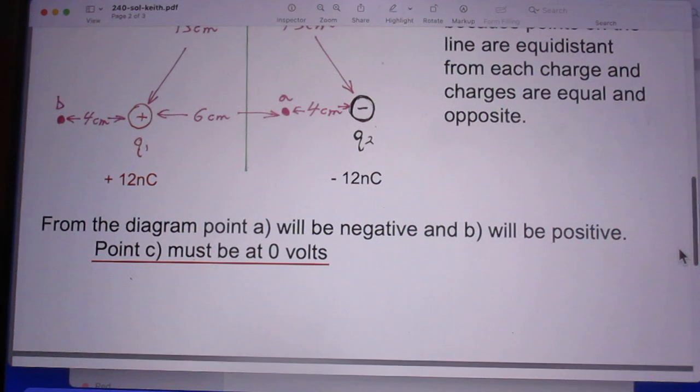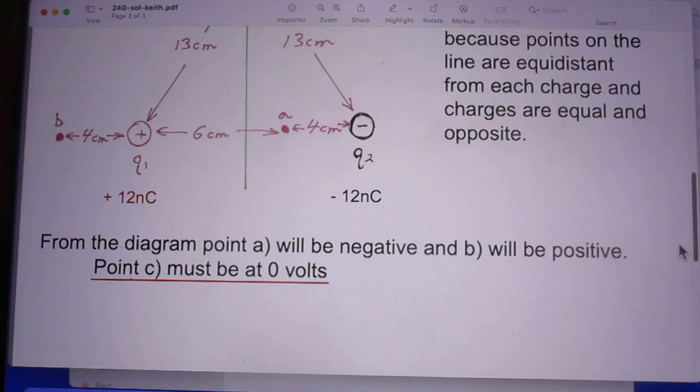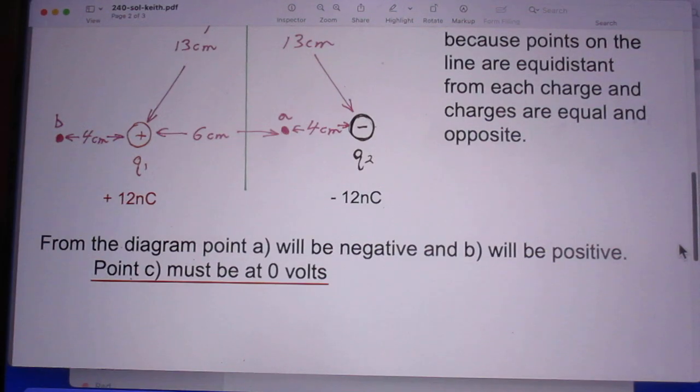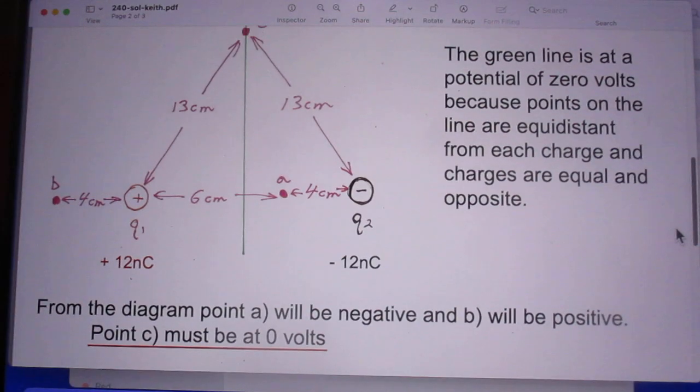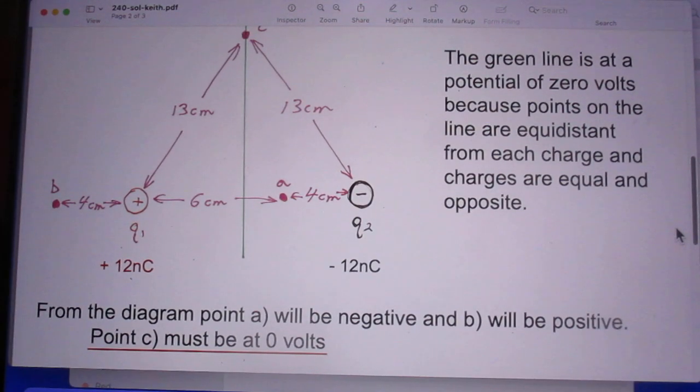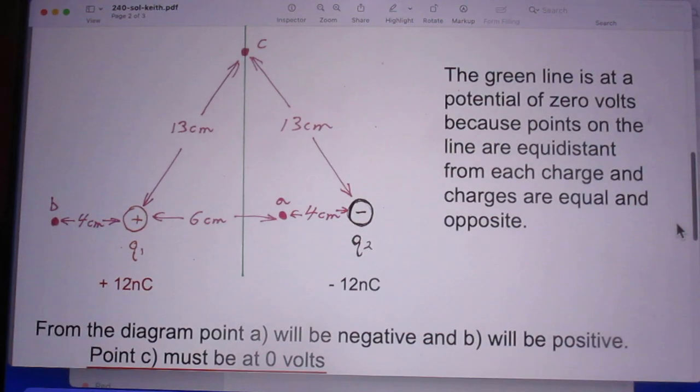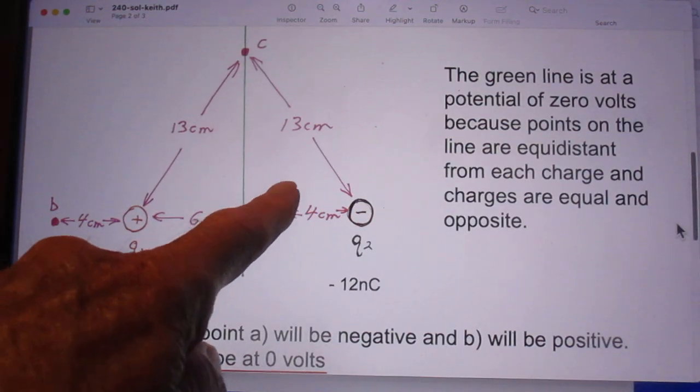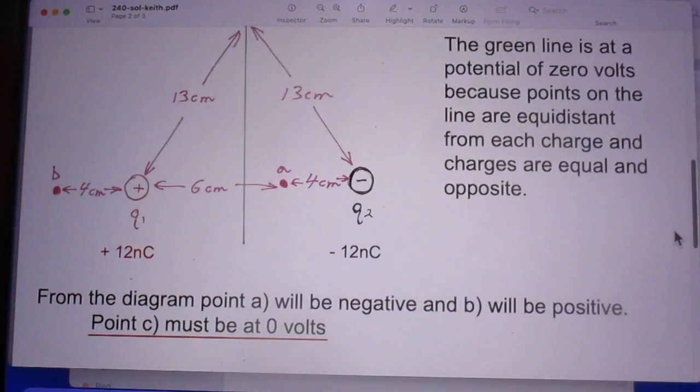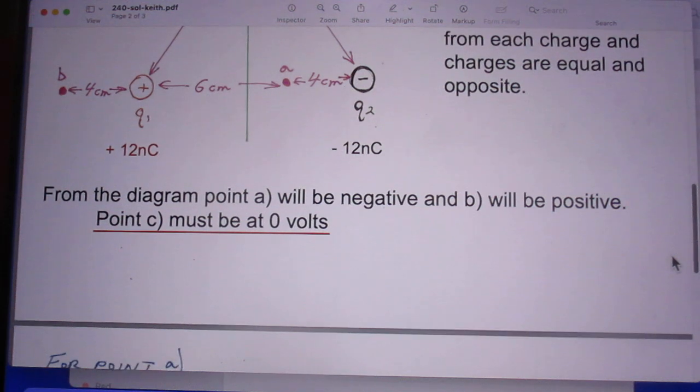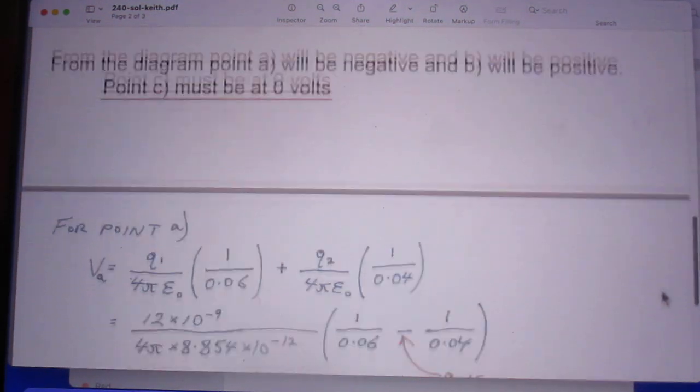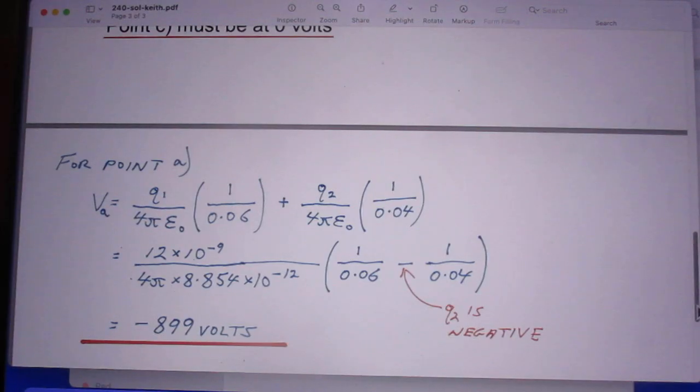From the diagram, point A will be negative and B will be positive. So here is A and here is B. And point C is of course zero because it's on the green line. And now it's a matter of grinding some simple high school algebra.